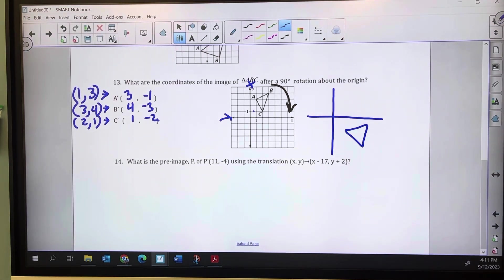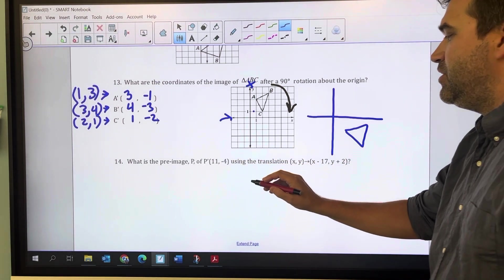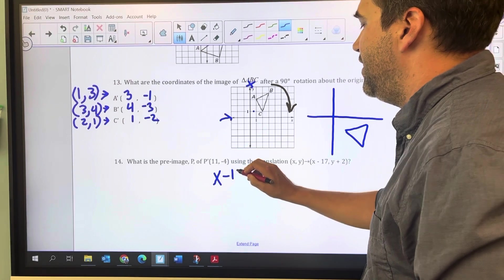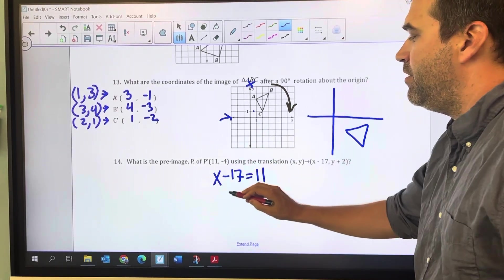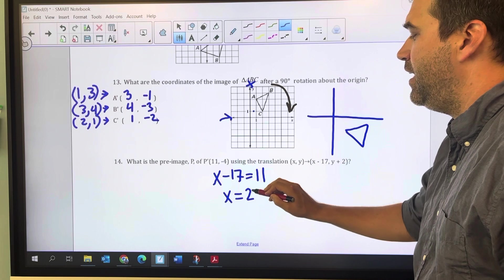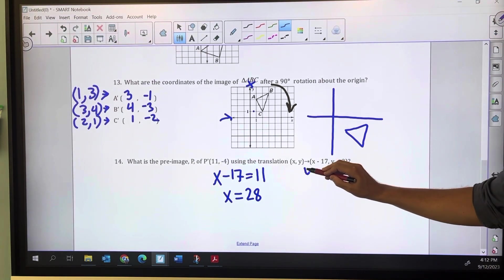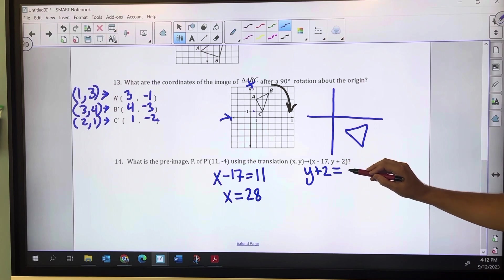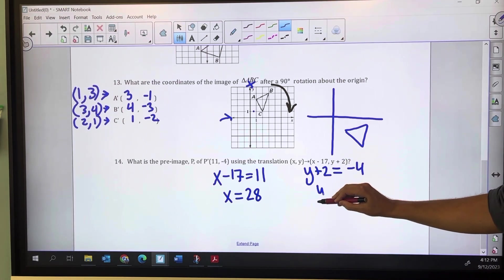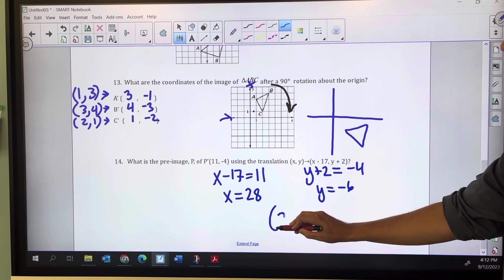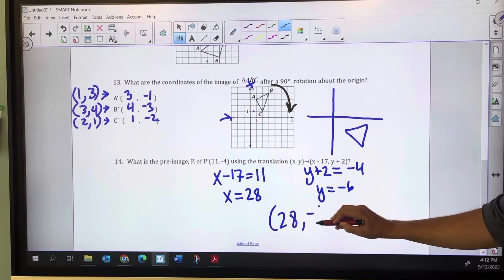Number 17: what is the pre-image given the translation? This one we have to move backwards. We're given the image and asked about the pre-image. I know I subtracted 17 to get to 11, so x minus 17 equals 11, which means x equals 28. I also know y plus 2 equals negative 4, so y equals negative 6, which gives me the point (28,-6).